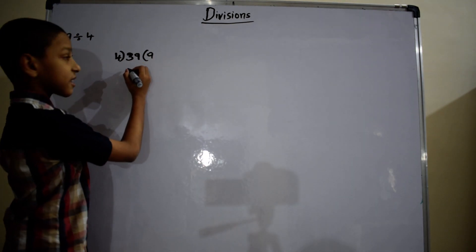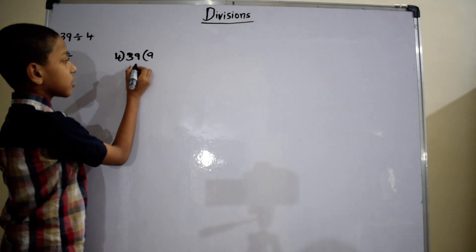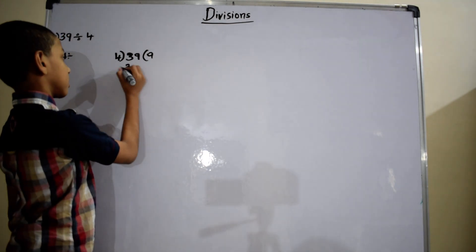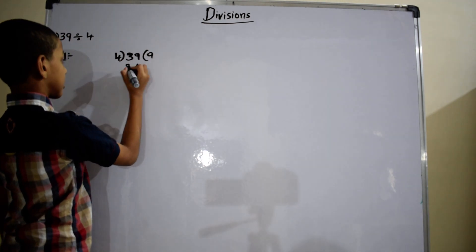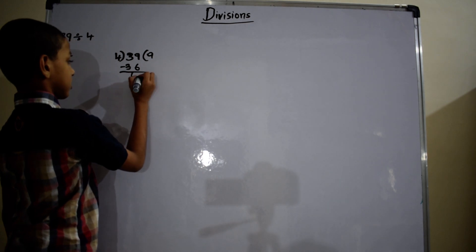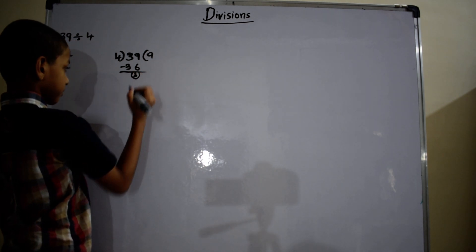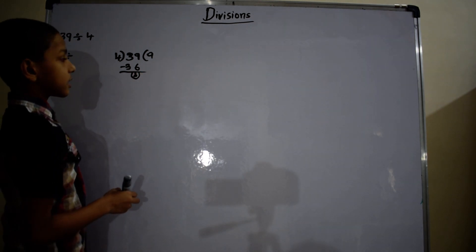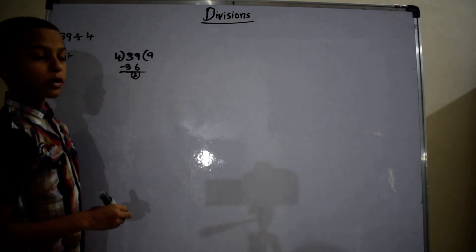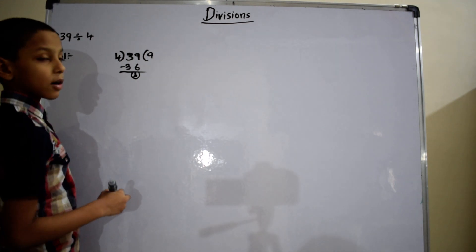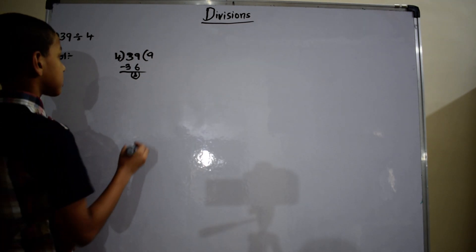Write 36 below the dividend and subtract it. So 39 minus 36 equals 3. It is not possible to divide 3 further, so our remainder is 3.